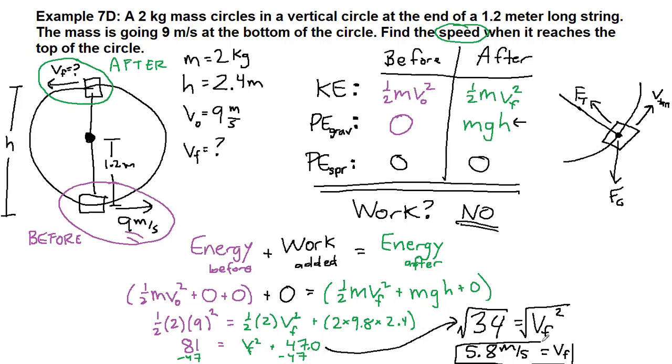Now an easy check for us to make sure that's a reasonable number is it should be slower than when we were at the bottom of the circle because gravity has been slowing us down. We had all of our energy in one term at the start of this situation and we had to split it. We had to share energy between being able to be moving and being able to be higher. So our quick check to see if it makes sense is we should have expected a number smaller than 9.